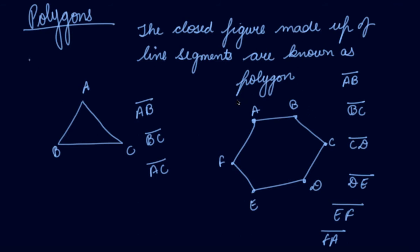Now, with this figure I will explain what sides are. The line segments AB, BC, and CA are the sides of the triangle. In the hexagon, AB, BC, CD, DE, EF, and FA are the line segments — these are the sides we have found out.